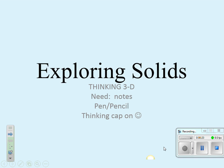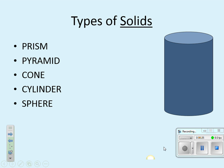So let's think — what are solids? Well, there's prisms, pyramids, cones, cylinders, and spheres. As you can see, I have a cylinder, and these are all 3D shapes. These are all solids and we can measure different things with our solids, including surface area and volume.